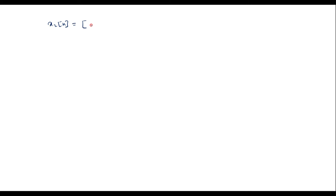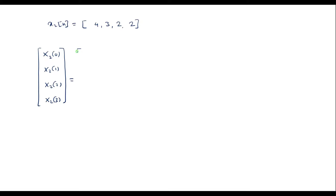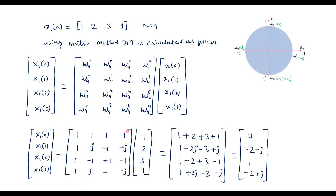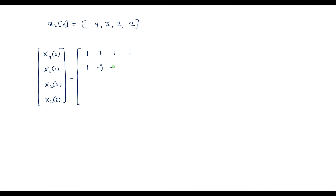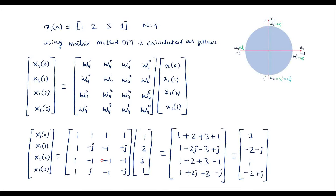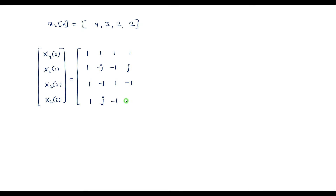Now let me calculate the DFT of the second sequence, x2 of n, which is given as 4, 3, 2, 2. I will write it in matrix form to find X2 of k, with entries x2 of 0, x2 of 1, x2 of 2, x2 of 3. I will write the twiddle factor matrix directly: first row 1, 1, 1, 1; second row 1, −j, −1, j; third row 1, −1, 1, −1; fourth row 1, j, −1, −j. The input sequence is 4, 3, 2, 2.